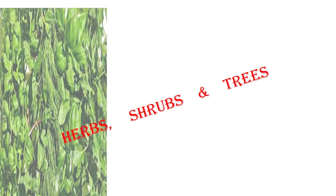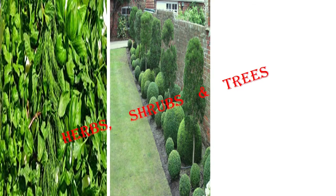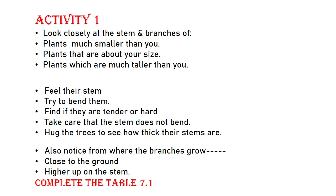Next we will be discussing about herbs, shrubs, and trees. Let us take a look at what these herbs are. You can see the pictures of shrubs and trees. These are the different types of plants which we will be studying. There is Activity 1 in your textbook. You have to look closely at the stem and branches of plants much smaller than you.